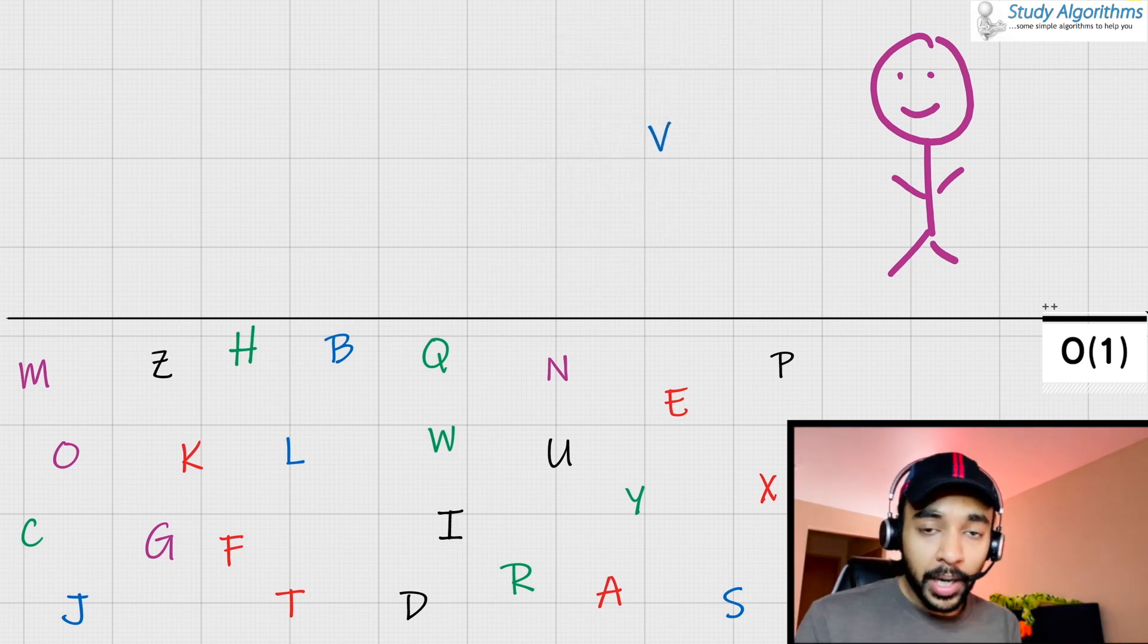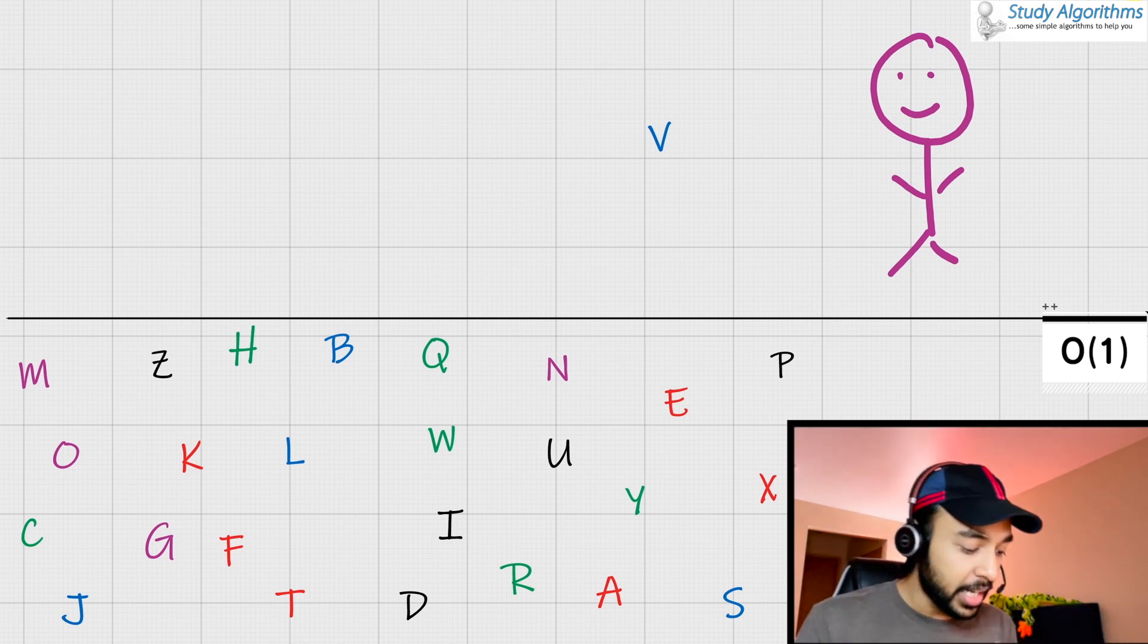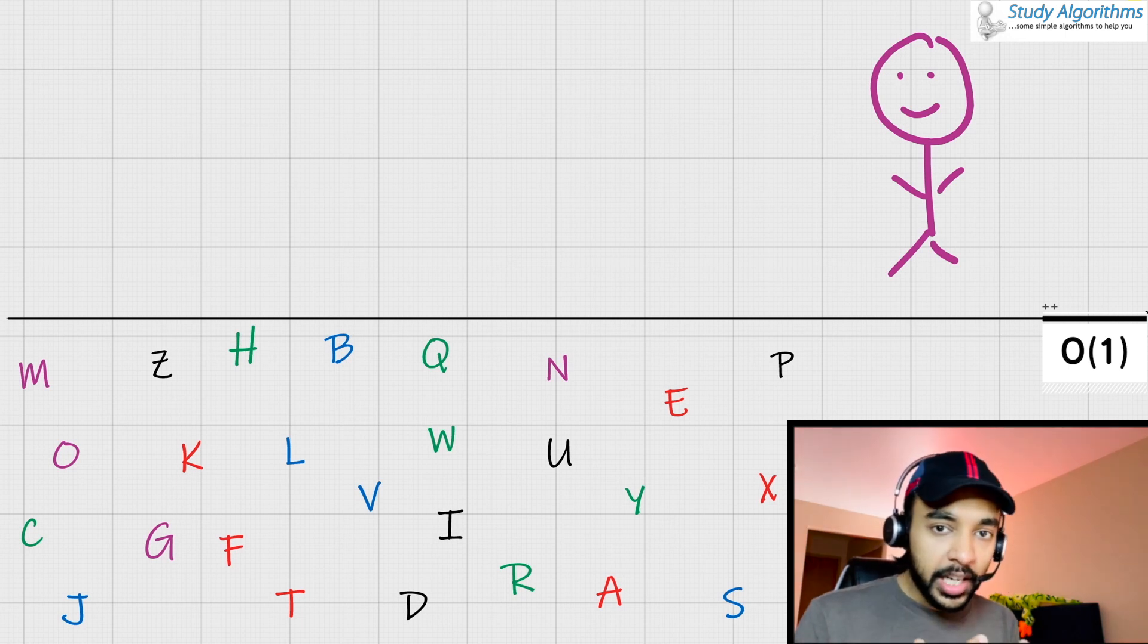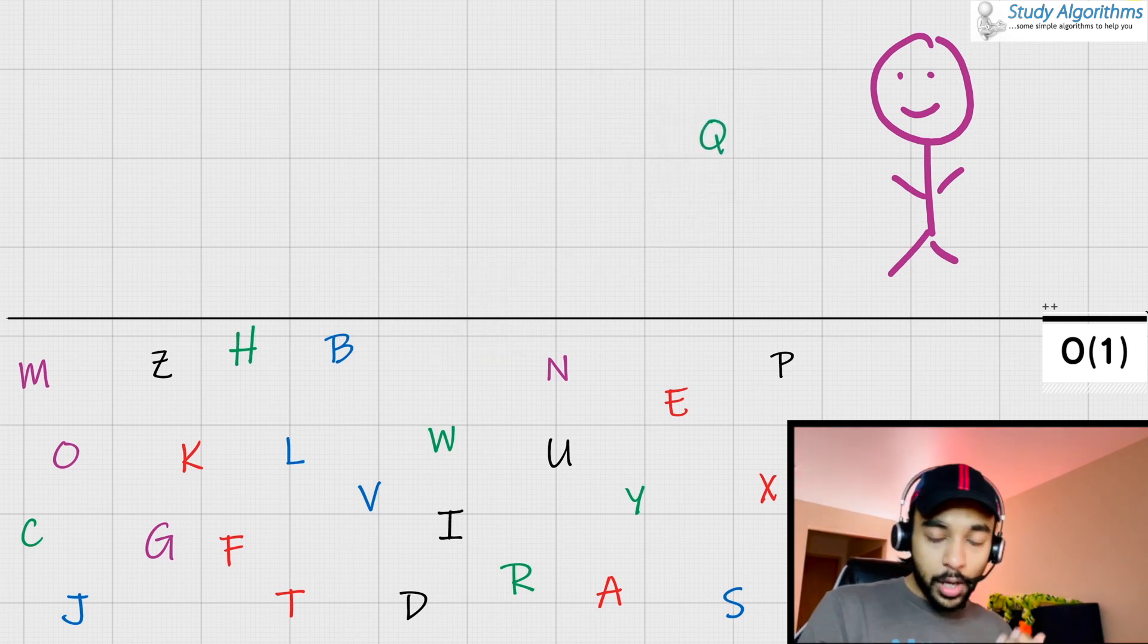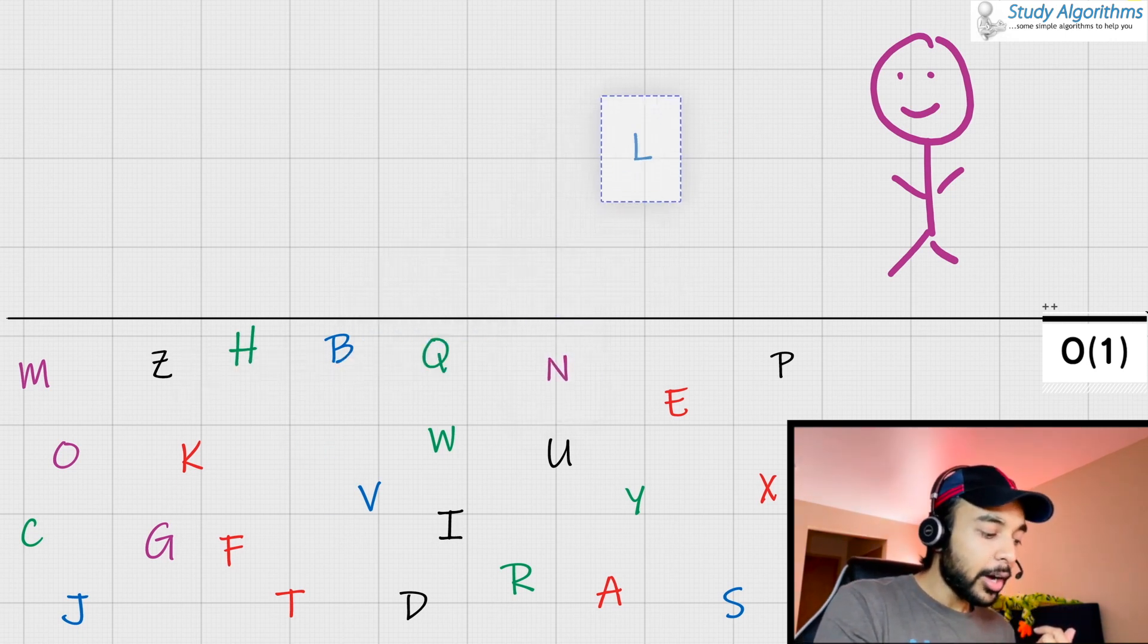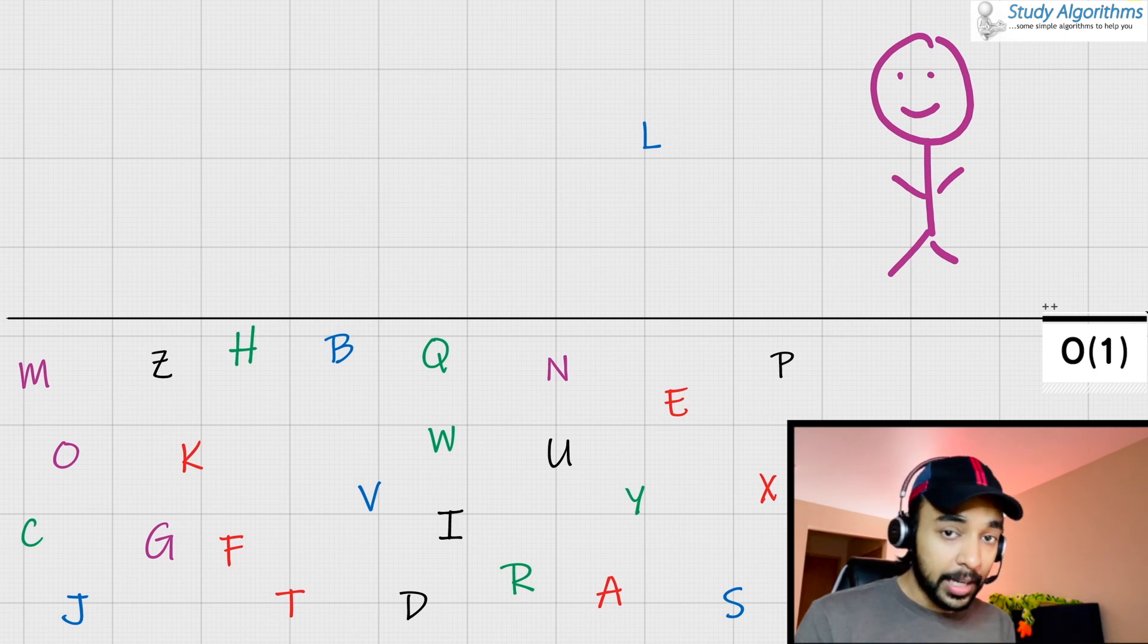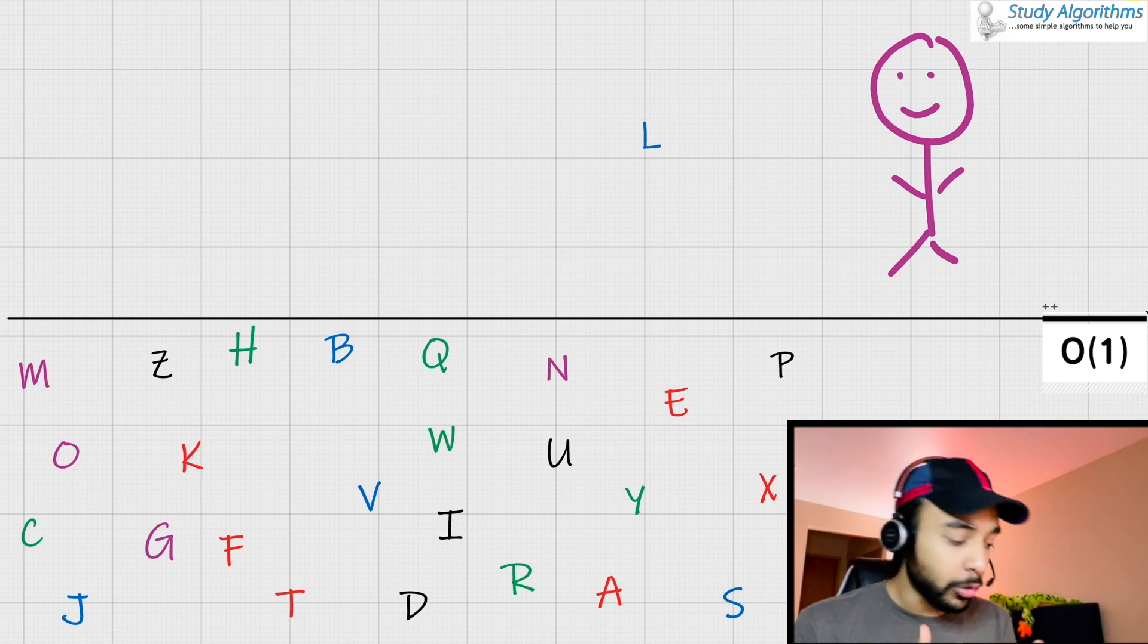Now it does not matter how many characters there are lying on the floor. Since I am asking you to pick up any random character, instead of the letter V, you could have also gone and pick up the letter Q or you could just close your eyes and pick up any letter. Now let us say you are picking up the letter L. What I mean to say over here is that it does not matter how many characters there are lying on the floor. Right now you have 26 characters.